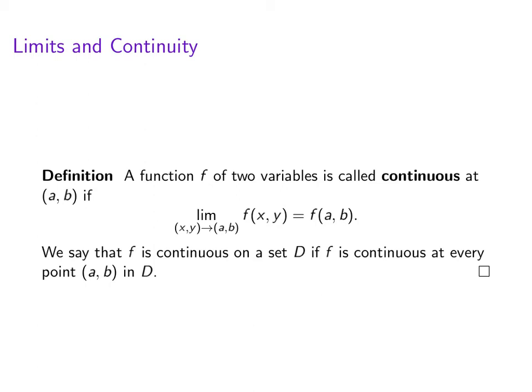This presupposes that the function is defined at (a,b) and that this limit exists. And we'll say that f is continuous on some set D if f is continuous at every point in D.